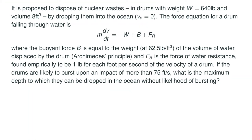In our next problem, it is proposed to dispose of nuclear waste in drums with weight w equal to 640 pounds and a volume of 8 cubic feet, by dropping them in the ocean with an initial velocity of 0. The force equation for a drum falling through the water is: mass times dv/dt equals negative w plus B plus F_r, where B is the buoyant force equal to the weight of the volume of water displaced, and F_r is the force of water resistance.